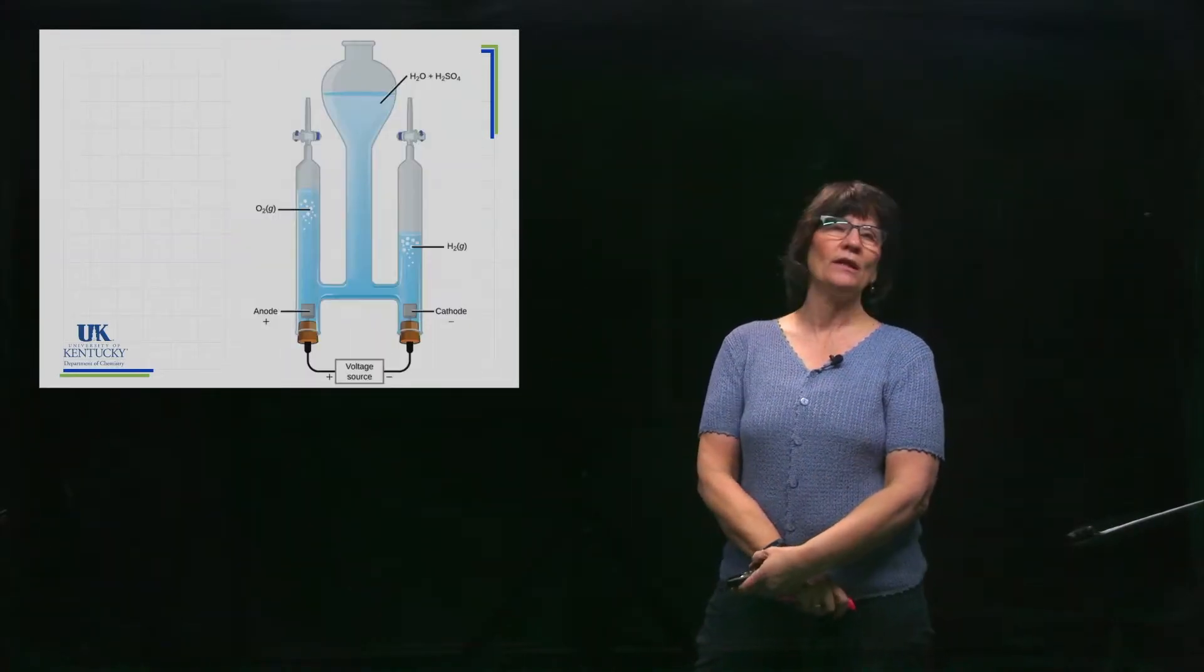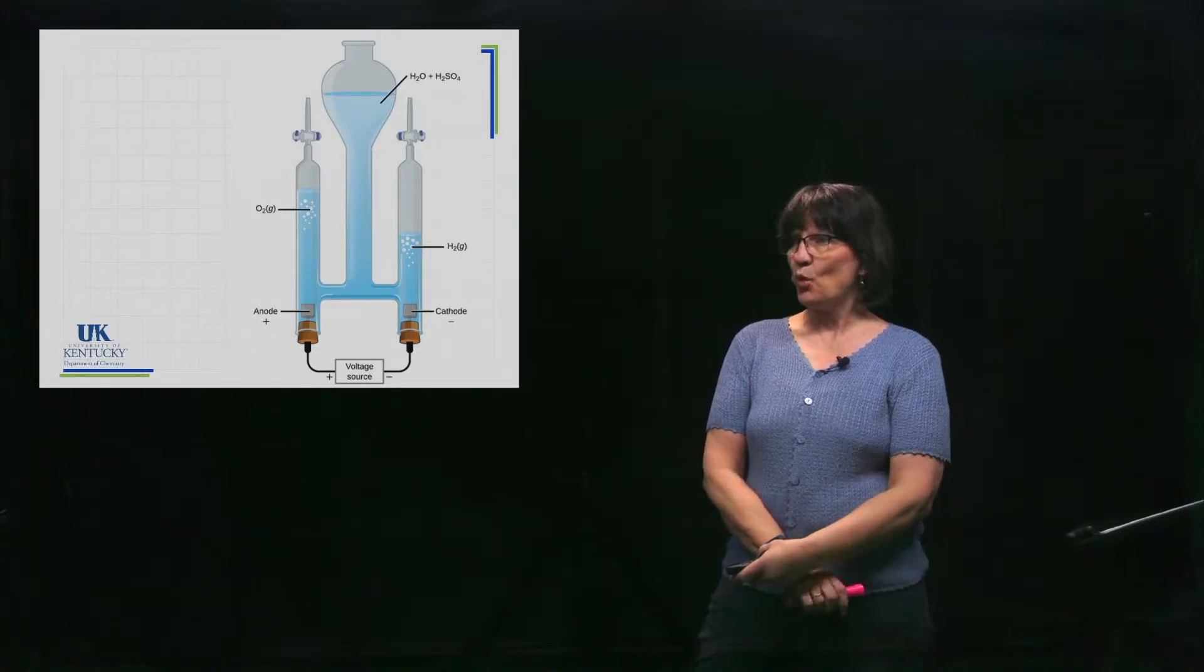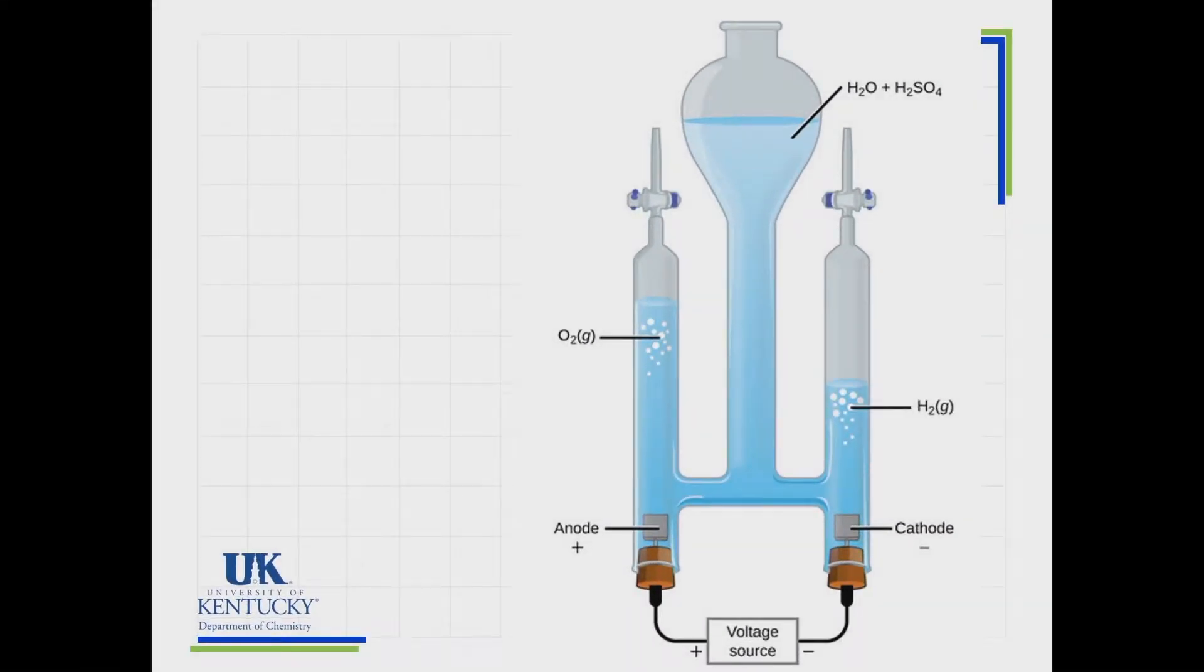Here's an electrolytic cell used for splitting water. We see water is placed in there, a voltage source at the bottom. It has to be a direct current, not an alternating current like comes out of our plugs in the walls. You have to have a direct source of flow so it's pumping in one direction.